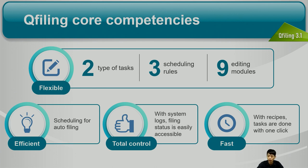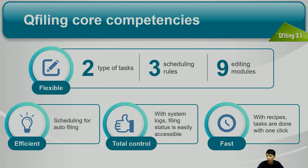Here are QFiling's core capabilities. QFiling is very flexible — you can set up the rules you need. We offer two types of tasks, three scheduling rules, and nine editing modules. It is really efficient. QFiling scheduling can help you to automatically file all your data, and you have total control. You can see the system log and every task log to see how your files get filed, and it is really fast if you use a recipe to create a task.